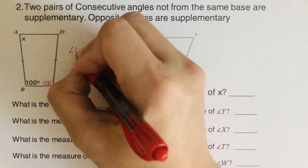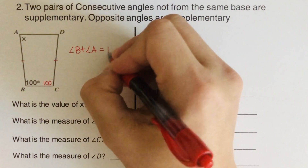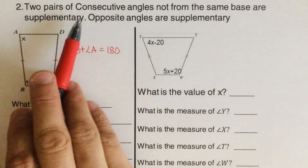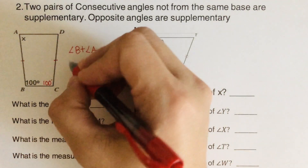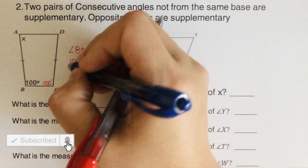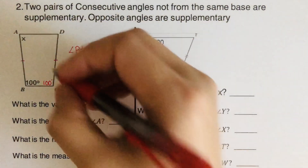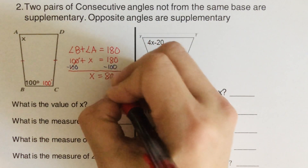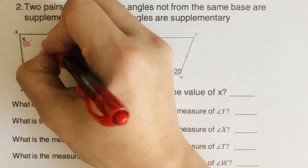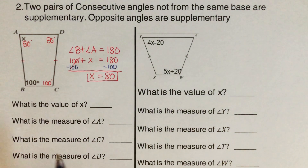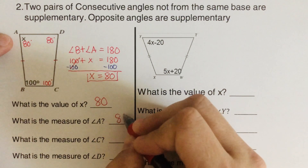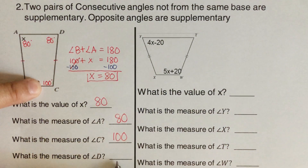Angle B plus angle A equals 180 since they are supplementary consecutive angles not from the same base. Angle B is 100, and angle A is represented as x, so 100 plus x equals 180. Subtracting 100 from both sides gives x equals 80. So angle A is 80°, angle D is 80°, and angle C is 100°.